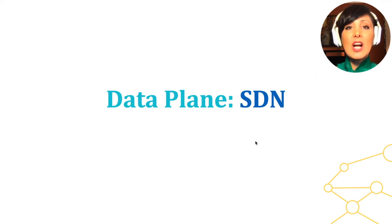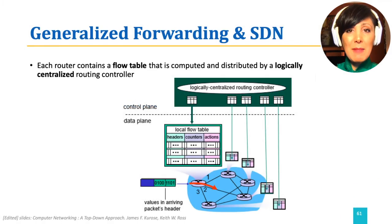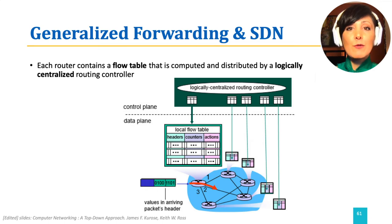Remember, when talking about destination-based forwarding, we mentioned longest prefix matching, where the destination was checked against a range of addresses with a length specification, and based on the matching, an action — which was forwarding the datagram to a specific port — happened.